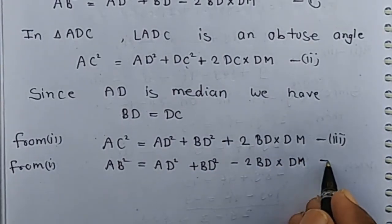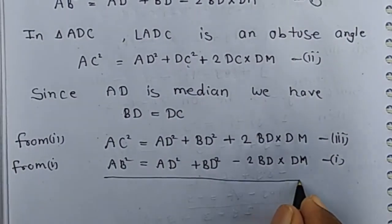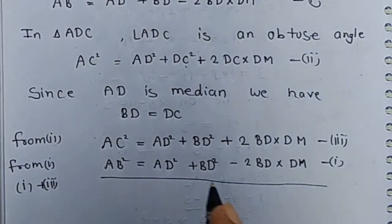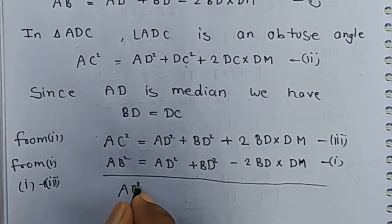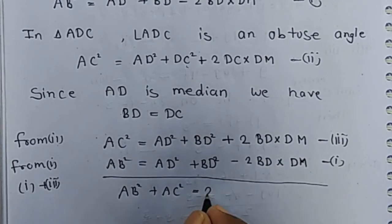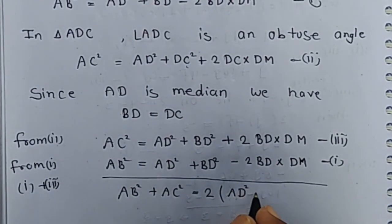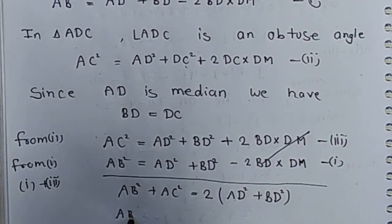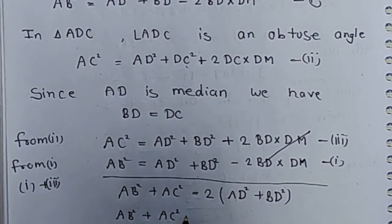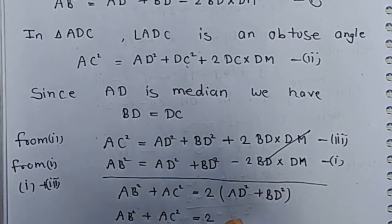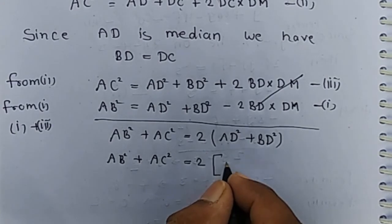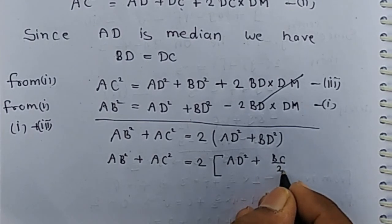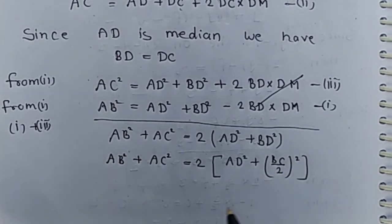Now adding equations 1 and 3, we have: AB² + AC² = 2(AD² + BD²), since the 2·BD·DM terms cancel out. Since D is the midpoint of BC, BD = BC/2, so we can write BD² = (BC/2)².